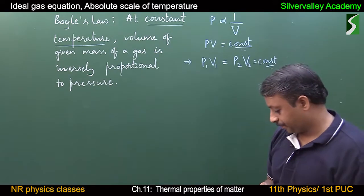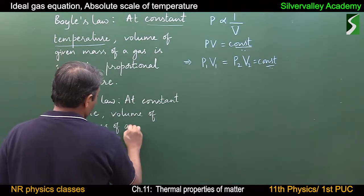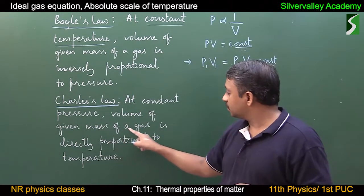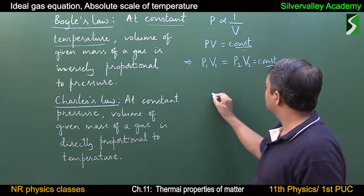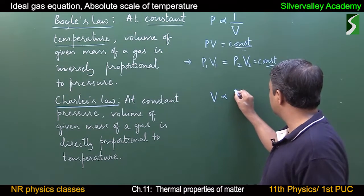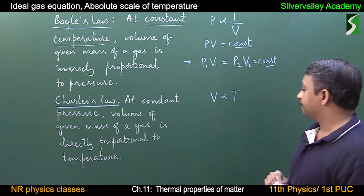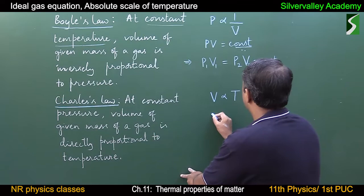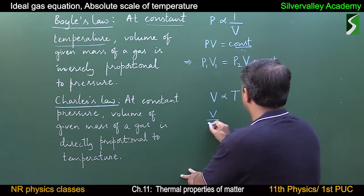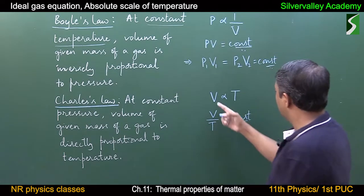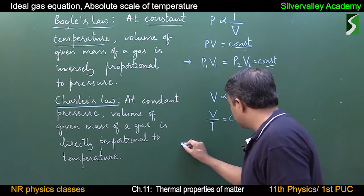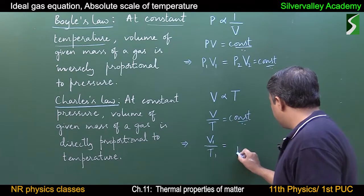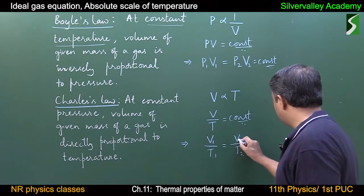Charles' law states that at constant pressure, the volume of a given mass of a gas is directly proportional to temperature. So volume is directly proportional to T. If temperature increases, volume increases; temperature decreases, volume decreases. This means V by T is a constant, which implies V1/T1 = V2/T2 = constant.